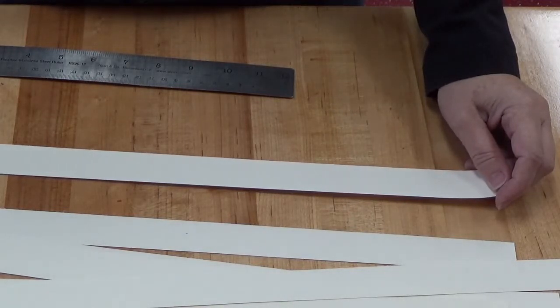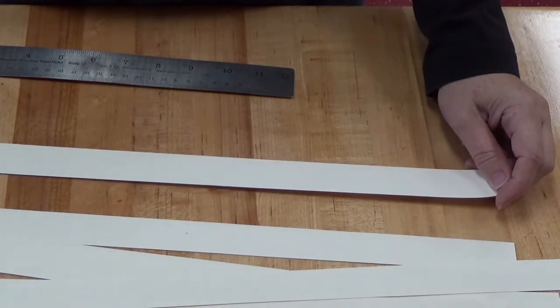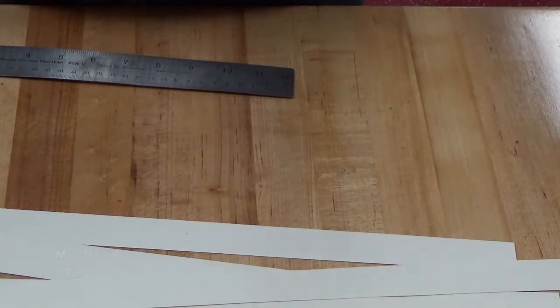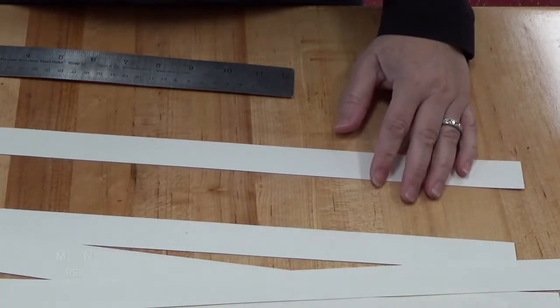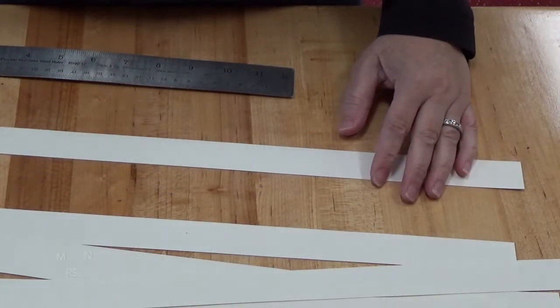This video is for my 3D design class. For this week you're to make a cube but you're not to use solid walls. Instead you're going to be using strips of paper or thin cardboard like you would have on a cereal box.